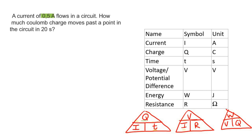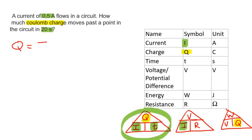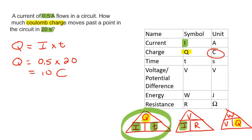A current of 0.5 — so we have the current, which is I. How much coulomb — so they're looking for charge, Q — moves past a certain point in the circuit in 20 seconds? So that's the time. We can just use that triangle. The Q is at the top, so you multiply the two bottom parts together. Q is going to be 0.5 multiplied by T, which is 20, and that's going to give you 10 Coulombs. You must remember to include the symbol and the unit.